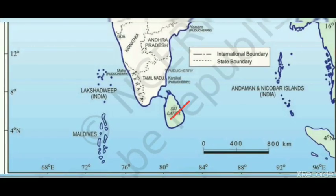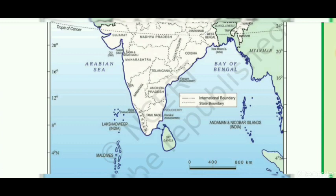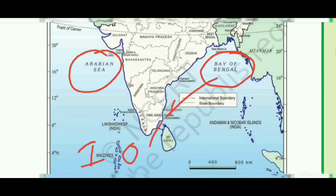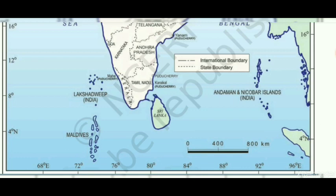From the map, Sri Lanka is here and the southern part of India is here. Between these two there is a narrow channel of water called the Palk Strait. The Palk Strait is a narrow channel that separates two land masses — India and Sri Lanka. It also connects two water bodies: the Bay of Bengal and the Arabian Sea side — this is the Palk Strait.